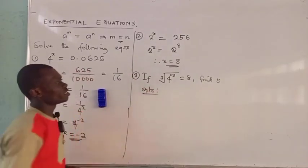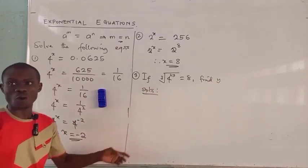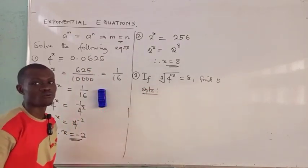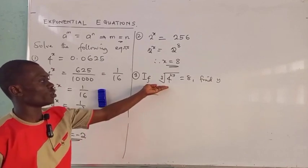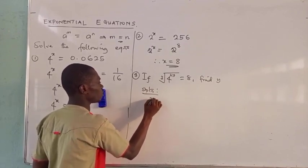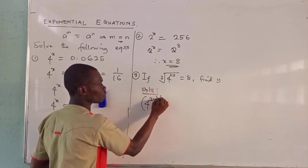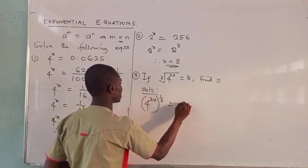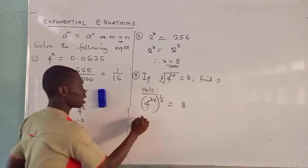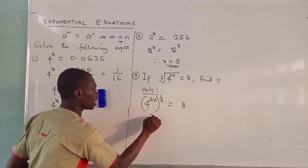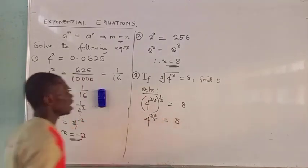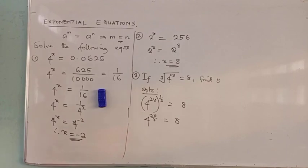The next example: the cube root of 4 raised to power 2y equals 8. We know that a root can be written as a power, so this becomes 4 raised to power 2y, then raised to power 1 over 3, which equals 8. Opening the bracket using the power-of-a-power rule, the powers multiply to give 4 raised to power 2y over 3 equals 8.